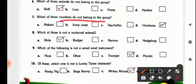Now, which of these countries do not belong to the group, it is Malawi, Ivory Coast, Seychelles and Honduras, so it is Honduras, because all others are country which is of Africa.